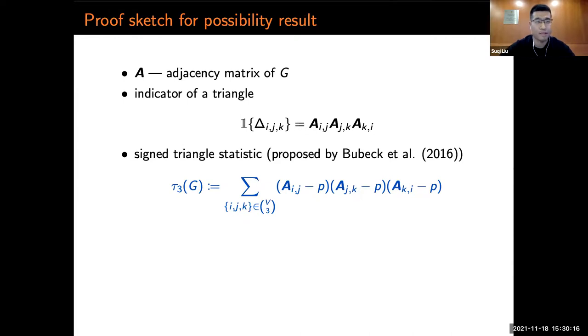Next, we turn to the possibility result. In a graph, the indicator of a triangle can be written as the product of the entries of the adjacency matrix. We use the signed triangle statistic, which was proposed by Bubeck et al. and used in later works frequently. The signed triangle statistic is nothing but a centered version of the triangle counts in the graph. The reason for this centering is to reduce the variance, which is crucial in the proof.